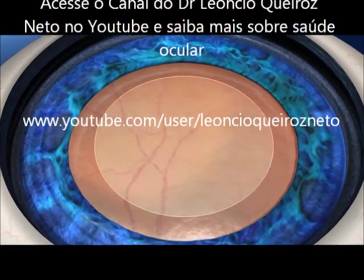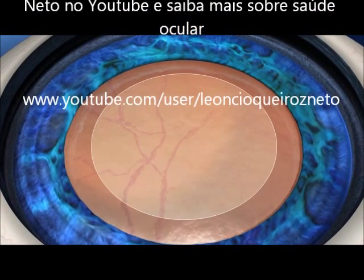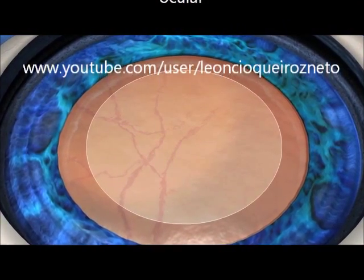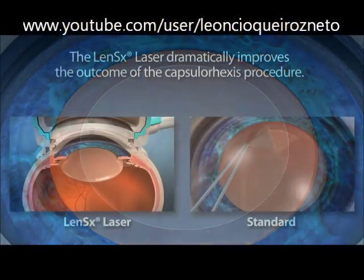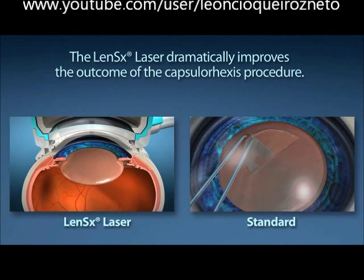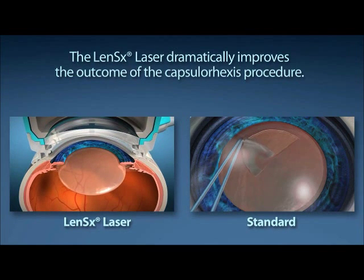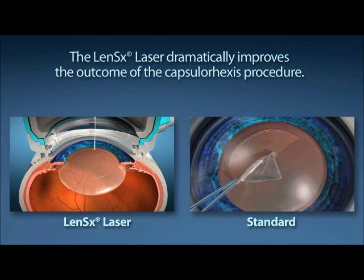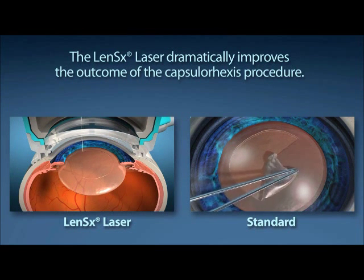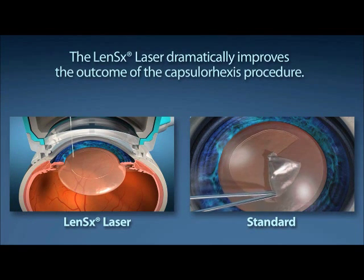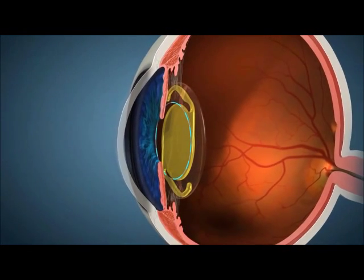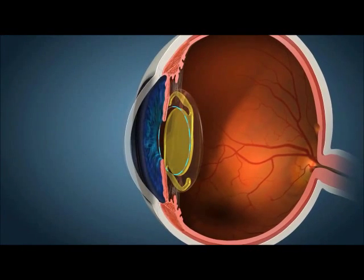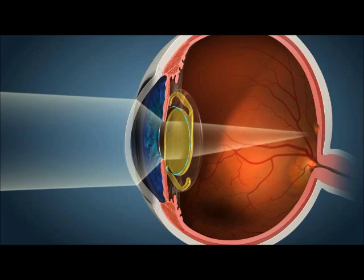The capsular axis is the single most important step in your visual outcome. In standard cataract surgery, this step is performed by the surgeon manually creating a circular opening with a handheld instrument. The LensX laser offers your surgeon laser precision to create the circular opening, allowing the lens to have the best possible effective lens position and enabling the patient to experience the most predictable post-operative visual results.